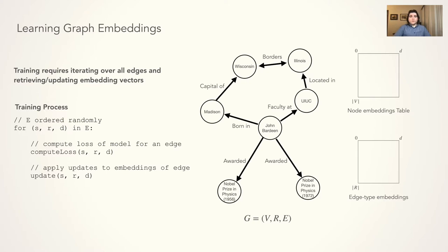Graph embeddings are trained by iterating over all the edges in the graph, where a loss term is computed per edge. The loss is then used to update the embeddings of the source node, edge type, and destination node of that edge. Typically, edges are grouped into batches, where the loss and updates are computed per batch.